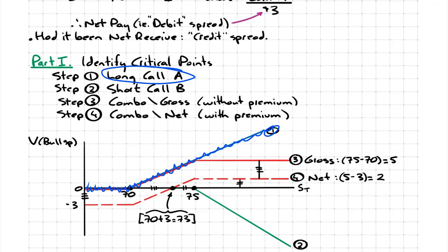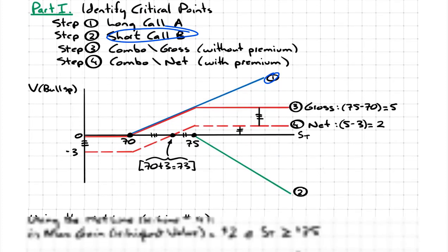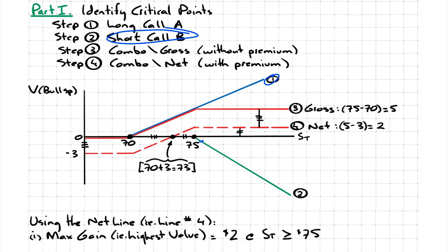That line is the profile for a long call position, and 70 is its strike price. So at any price above 70, you're making money. In step two, let's plot the short call, represented by line two. That is the profile for a short call position. You'll notice that the starting point or intercept is the strike price for call B, which is 75.